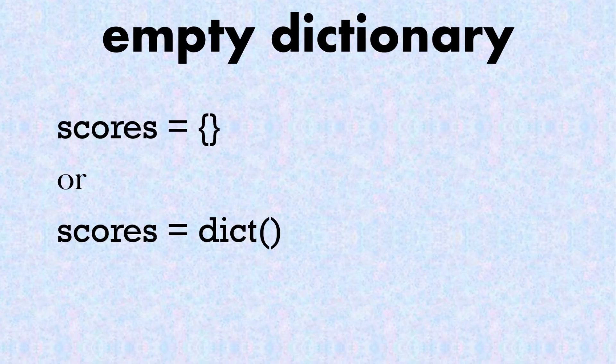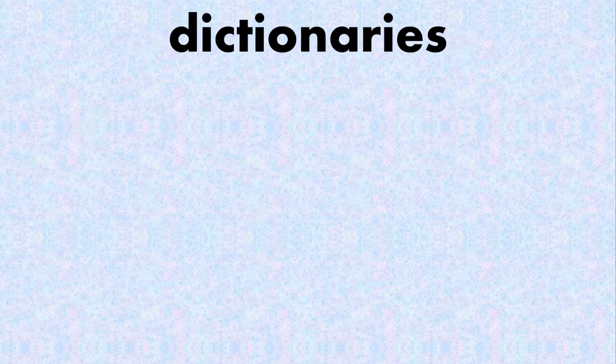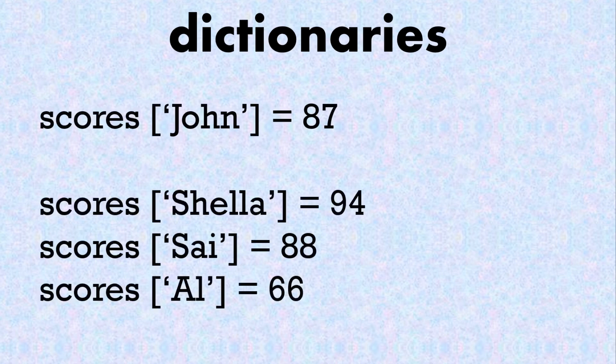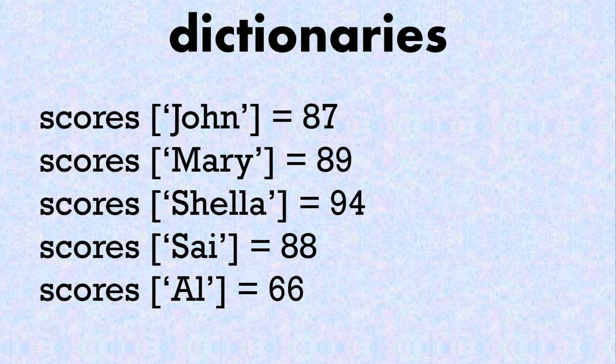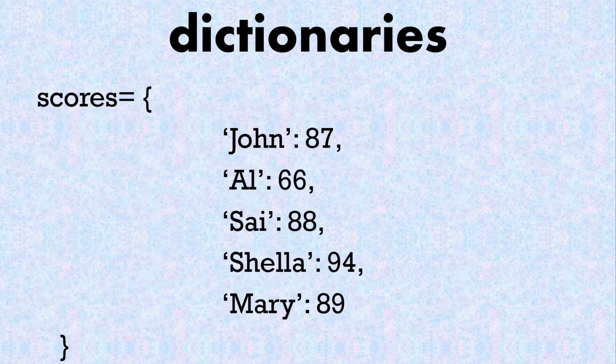In code we can have an empty dictionary — we can use dict() with round brackets or empty curly brackets. In this example we have a dictionary called 'scores' where the keys are names and the values are scores. We can put all the keys and values together inside curly brackets.